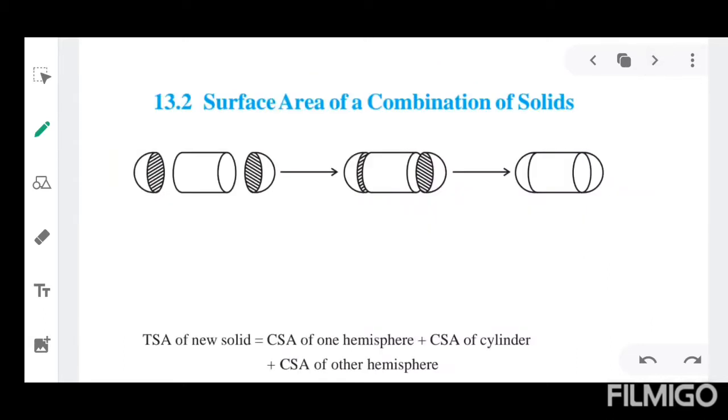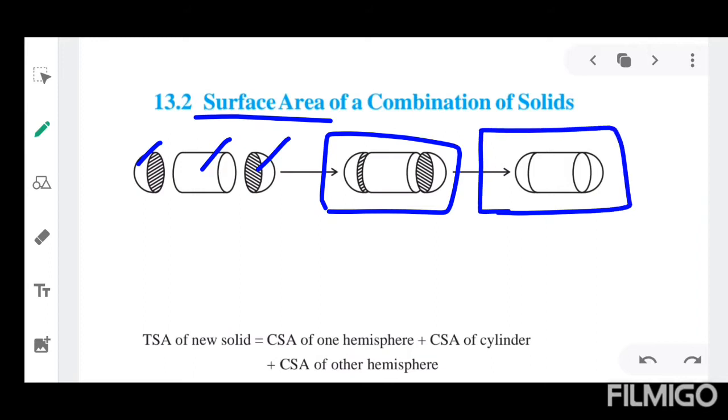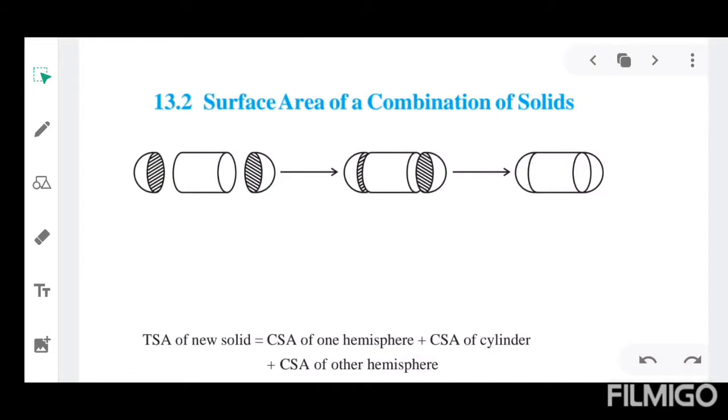First we will see about surface area of a combination of solids. Here we have a hemisphere, cylinder, and one more hemisphere. All these together form a single solid. To find the surface area of this solid, we will use curved surface area of hemisphere, cylinder, and again curved surface area of hemisphere. Let us see an example to understand this concept even more.